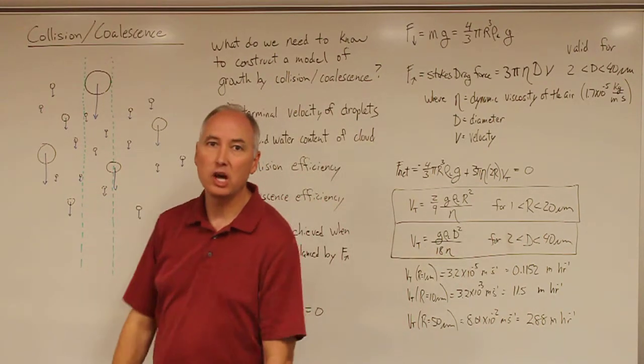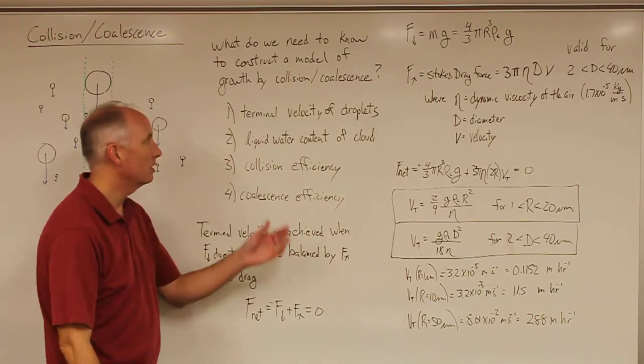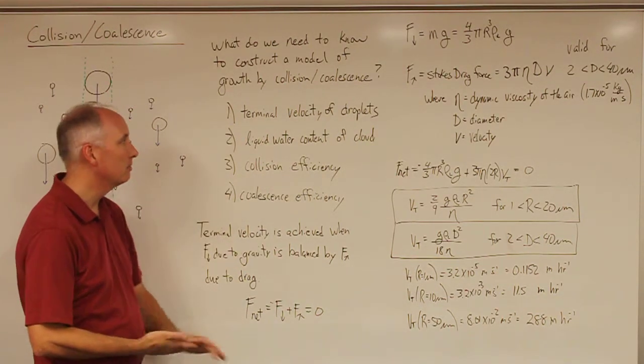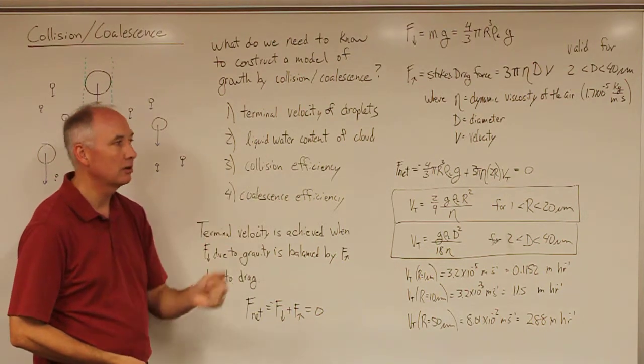The things that we need to know to be able to construct that model are: we need to know the terminal velocity of the droplets as a function of radius, the liquid water content of the cloud,